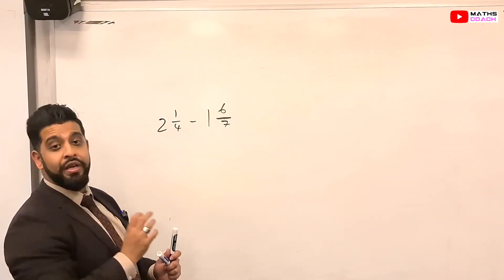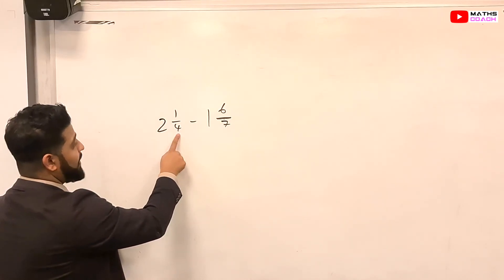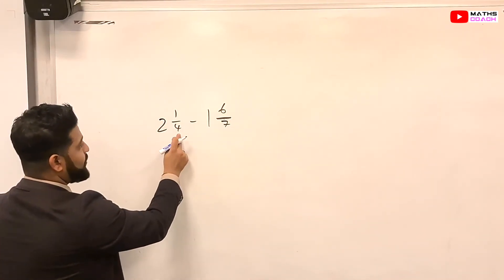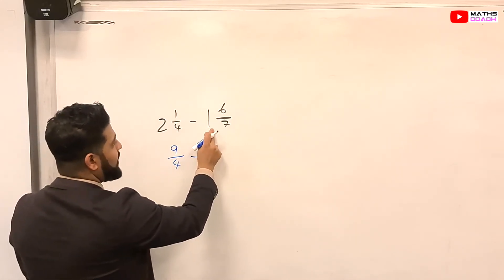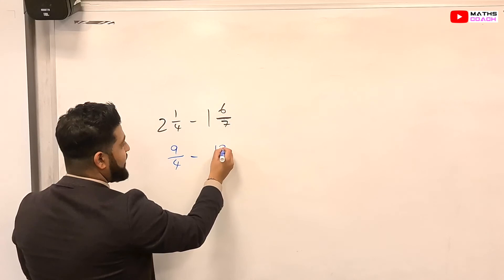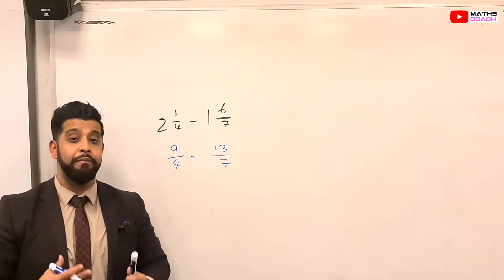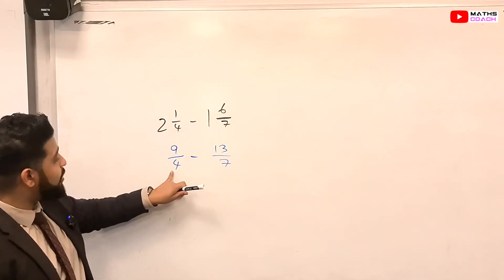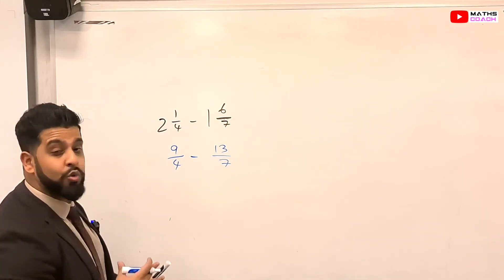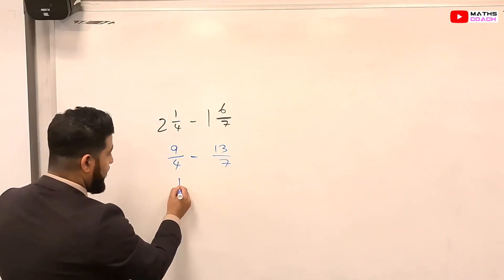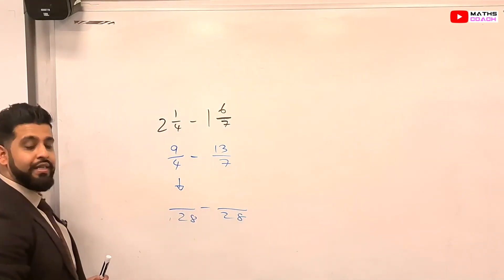Let's convert both of them into improper fractions or top-heavy. So the first one, 2 times 4 plus 1, which is... 2 times 4 is 8, plus 1 is 9 over 4, minus 1 times 7, plus 6, which is 13. So 13 over 7. So I've converted both of them into improper fractions. Now I will find a common denominator between 4 and 7. And it appears the common denominator is 28. So I will make both of them have a denominator of 28.